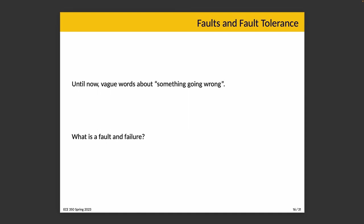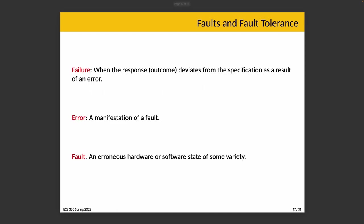Let's also talk about faults and fault tolerance. We've been discussing things going wrong, but we need a definition of a fault and a definition of a failure so we can talk realistically about fault tolerance. A failure, in the context of fault tolerance, is when the response or outcome deviates from the specification as the result of an error. An error is a manifestation of a fault. And a fault is an erroneous hardware or software state of some variety.